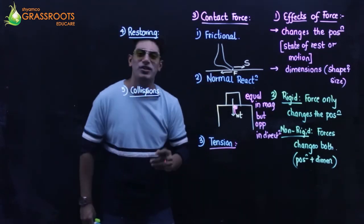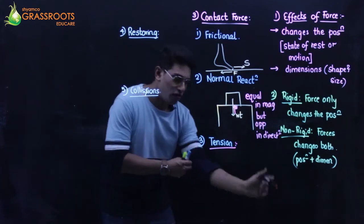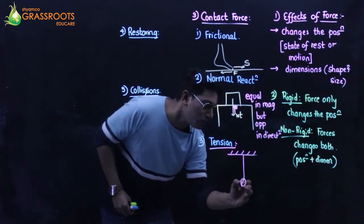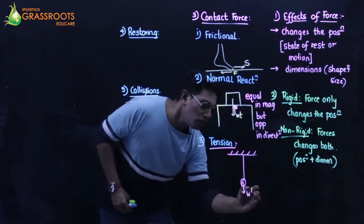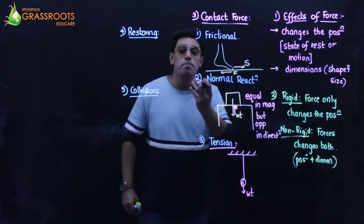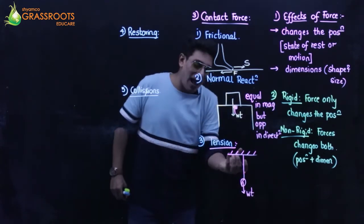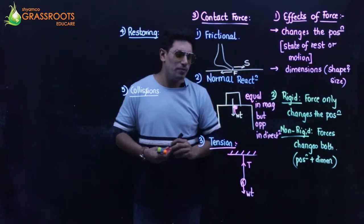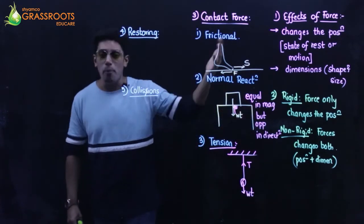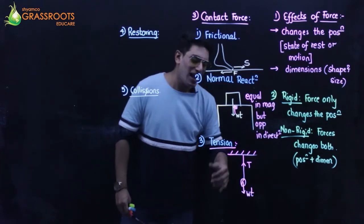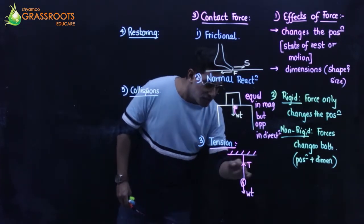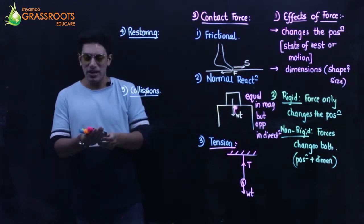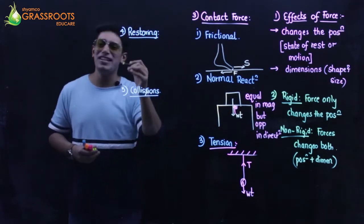Tension force is a force usually associated with a string. If there is a rigid support, a string, and a ball tied to the string - the weight of the ball acts vertically downwards due to gravity, and the tension in the string acts vertically upwards, equal in magnitude and opposite in direction. That's how the support remains intact.